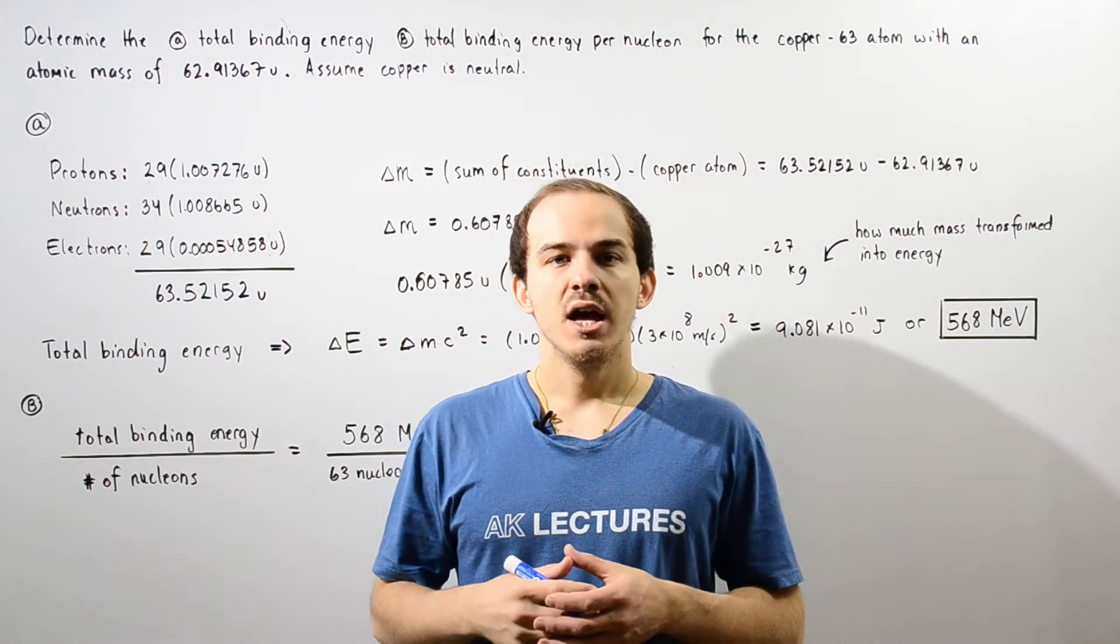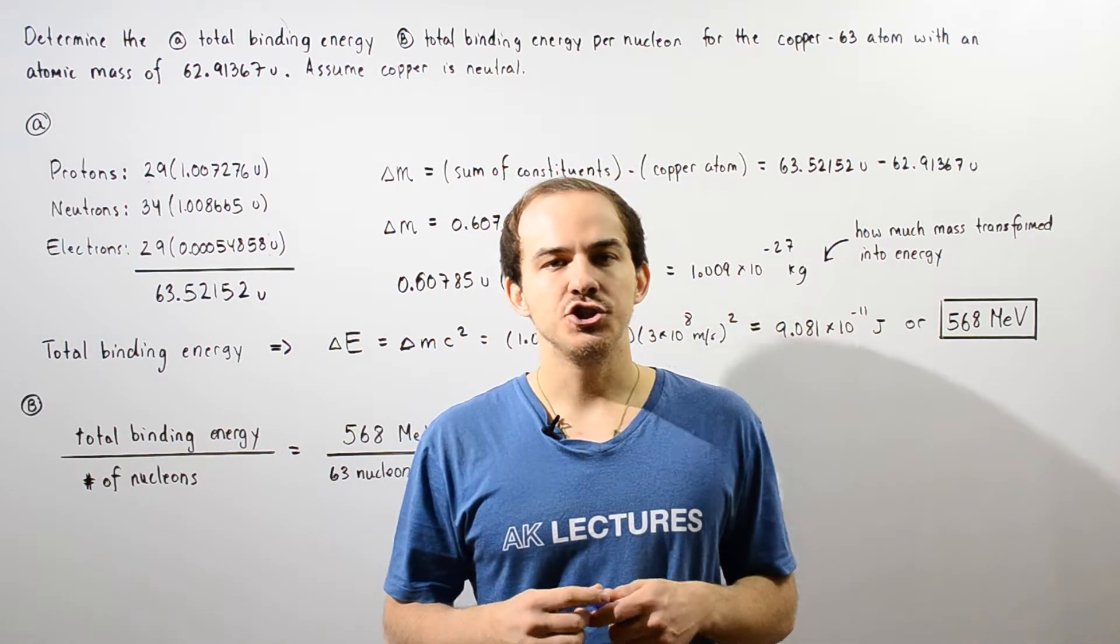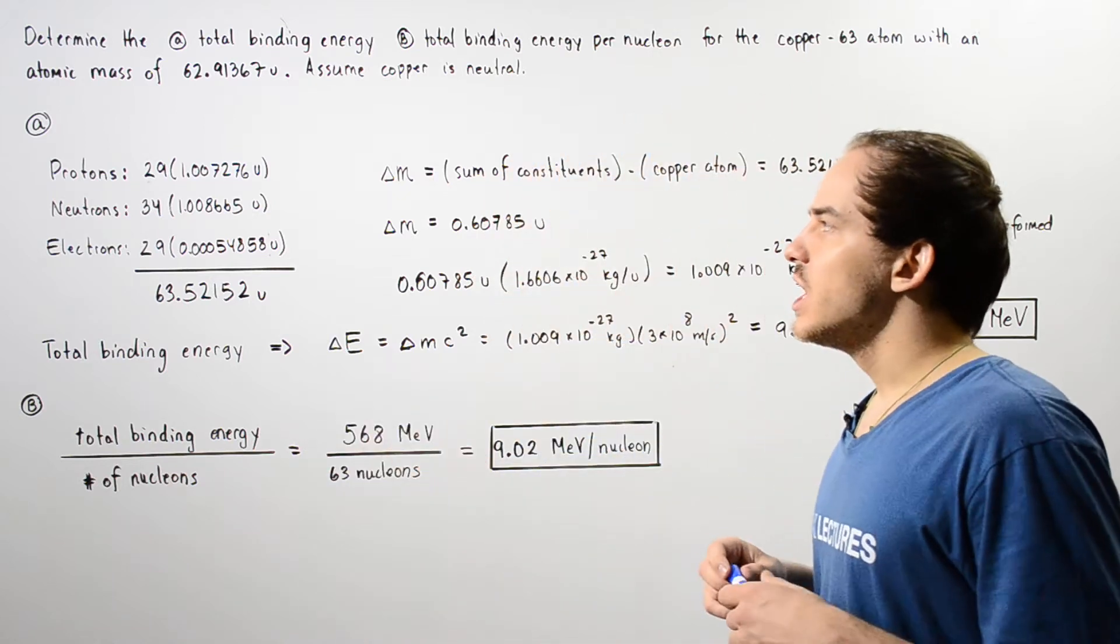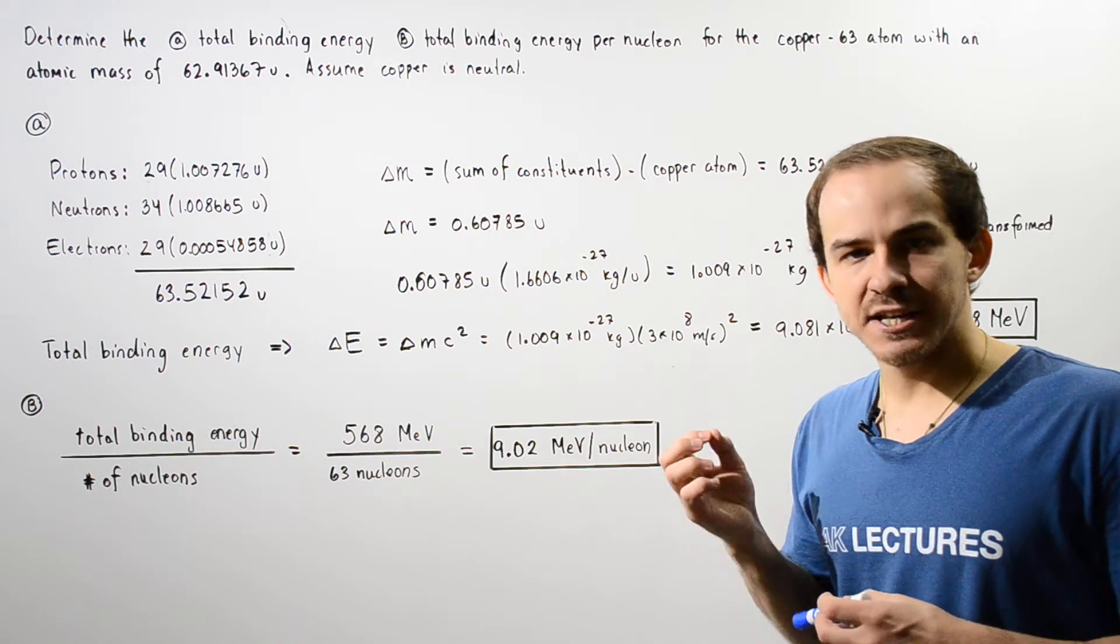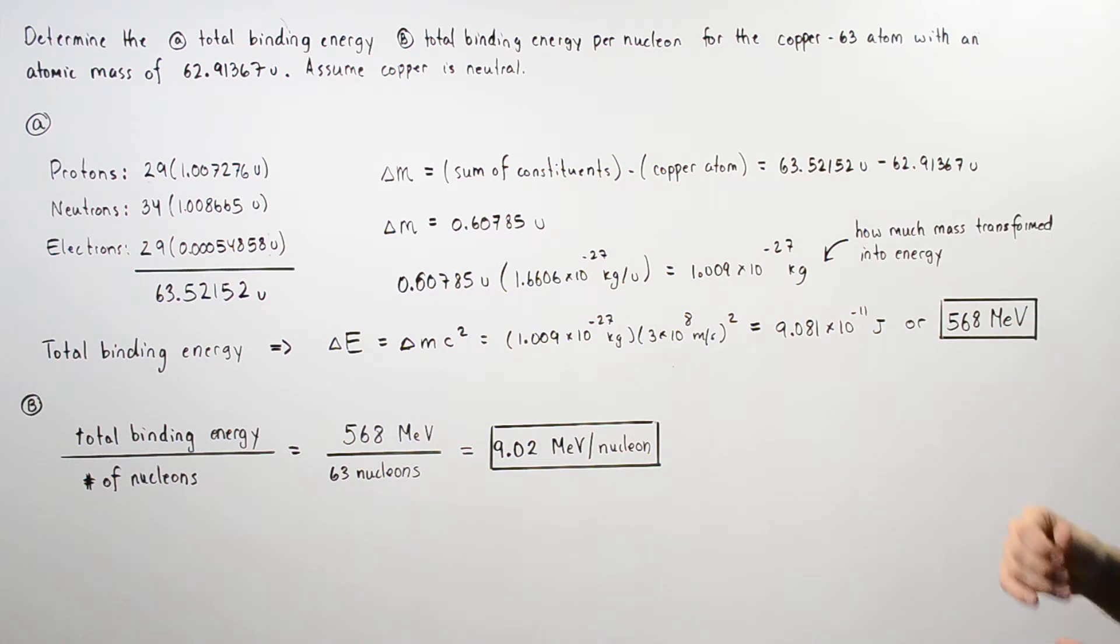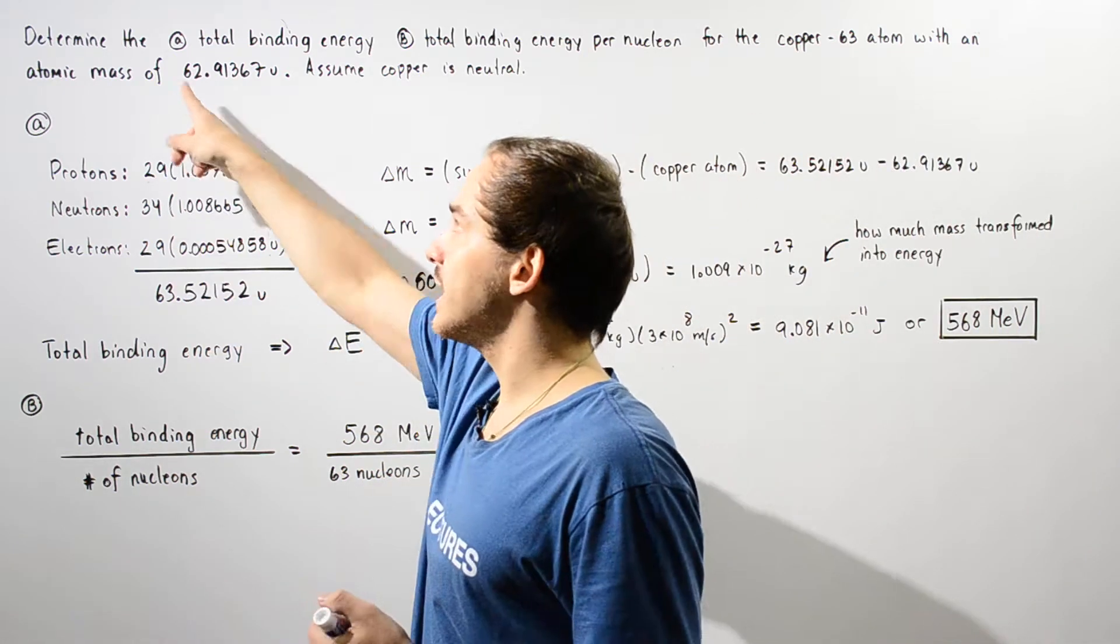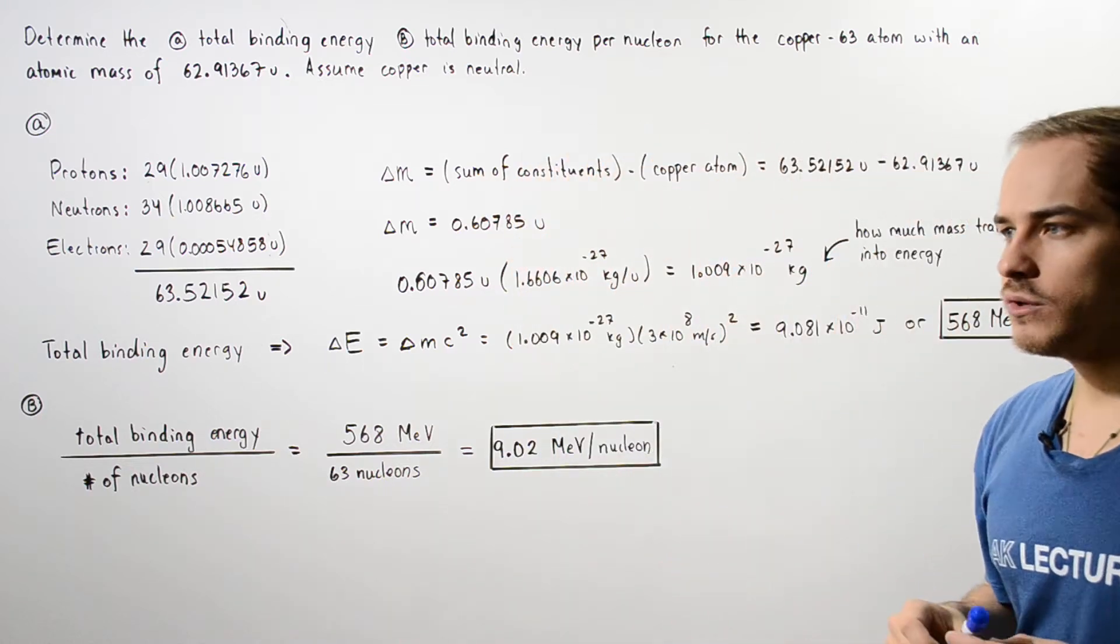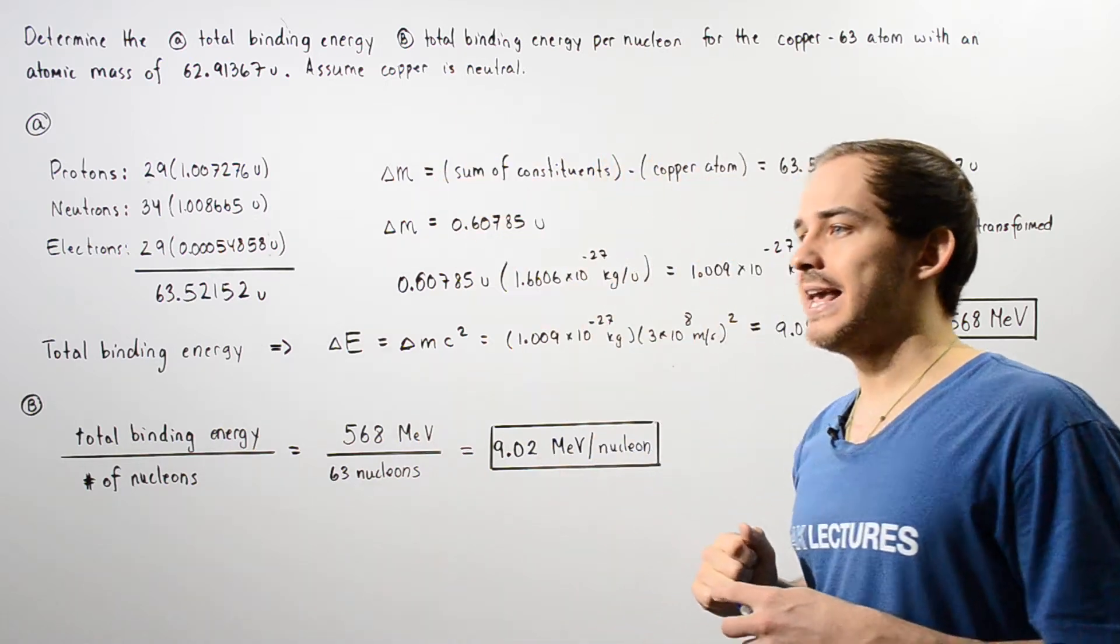Let's continue our discussion on the total binding energy of atoms and look at the following example. Determine the total binding energy and the total binding energy per nucleon for the copper-63 atom, assuming that the mass of the copper is 62.91367 unified atomic mass units and that the copper is a neutral atom.